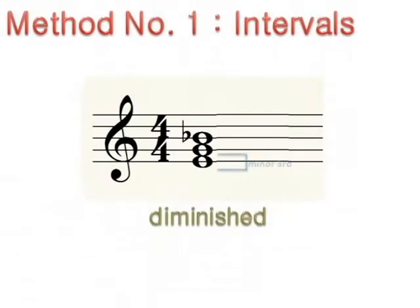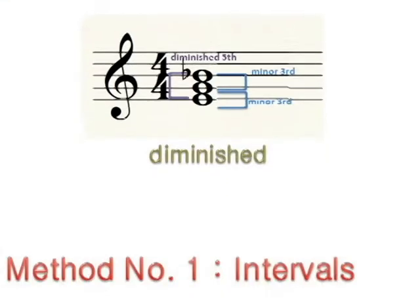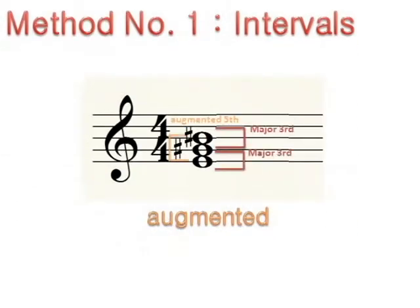Diminished triads are built with a minor third on the bottom and another minor third on top. This time, the interval between the root and the fifth is a diminished fifth. Augmented triads are built with a major third on the bottom and a major third on top. The resulting interval between the root and the fifth is an augmented fifth.